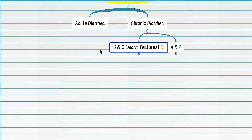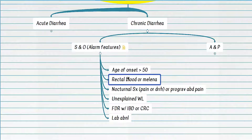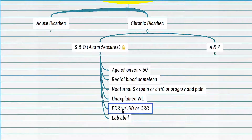Alarm symptoms or signs indicating the need for further workup include: age of onset older than 50 years; rectal blood or melena; nocturnal symptoms or progressive abdominal pain; unexplained weight loss; abnormal initial lab assessment; and a first-degree relative with IBD or colorectal cancer.